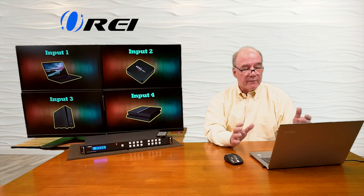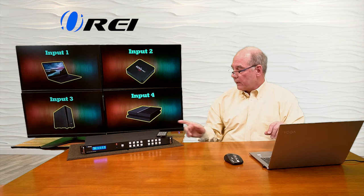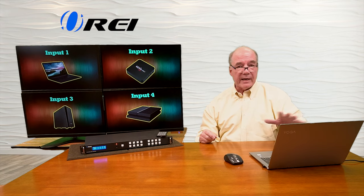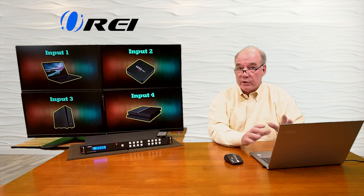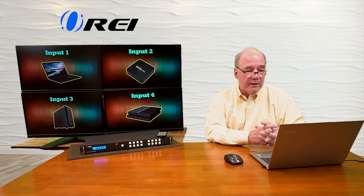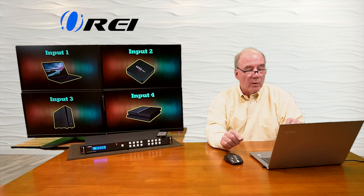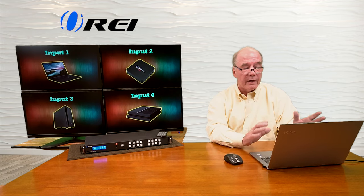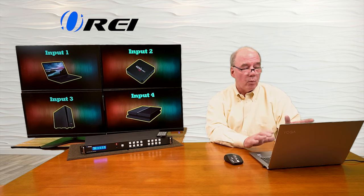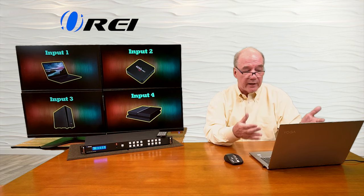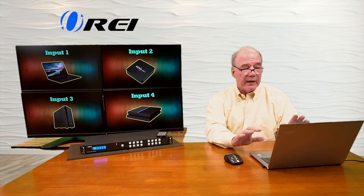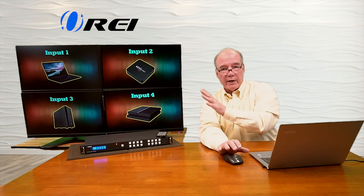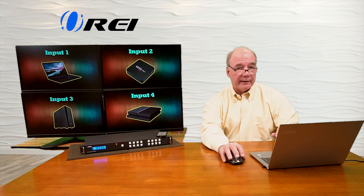I've already set this up. I've got it connected to my local network, and I'm accessing it over Wi-Fi. I had to change the IP address because the default is 192.168.0.247 — I changed it to 192.168.1.247 to fit my network. Once I searched for the device, it found it and connected to it. The first thing it does when you connect is talk to the switch and read all the current settings that are set up.